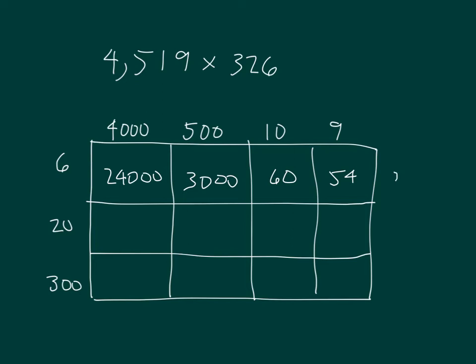Adding those up I would get 27,114. Continuing 20 times 4,000 is 80,000. 20 times 500 is 10,000. 20 times 10 is 200. 20 times 9 is 180. Adding those together that gives us 90,380.